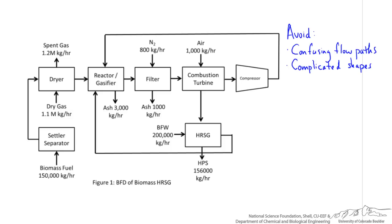Did you notice the crossing of the streams by the right bottom of the diagram? There is a way to draw this diagram to not have these lines crossing, but if they have to, then the vertical line should be broken.